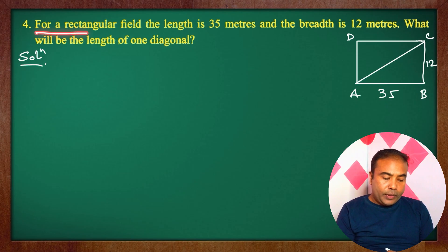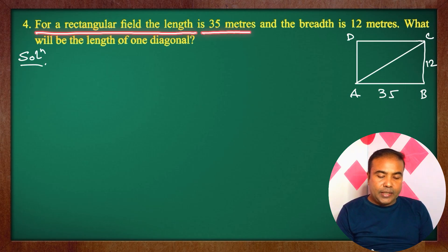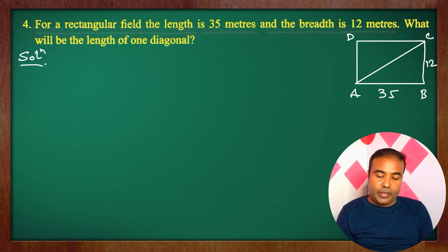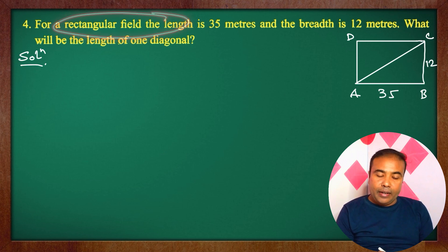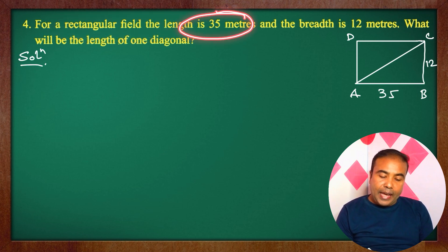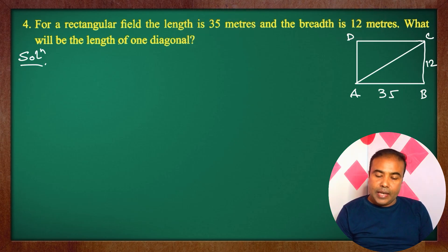Question No. 4: For a rectangular field, the length is 35 meters and the breadth is 12 meters. What will be the length of one diagonal? We need to find the length of the diagonal given the length and breadth of the rectangle.